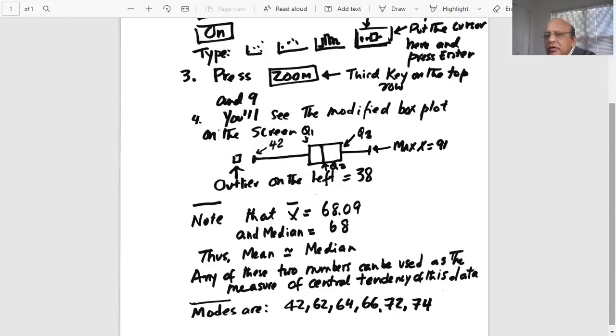I hope I explained well how to do this type of calculation using TI-84 to find the five-number summary, to find an outlier, to do the modified box plot, and to find the central tendency. Thank you. See you later.